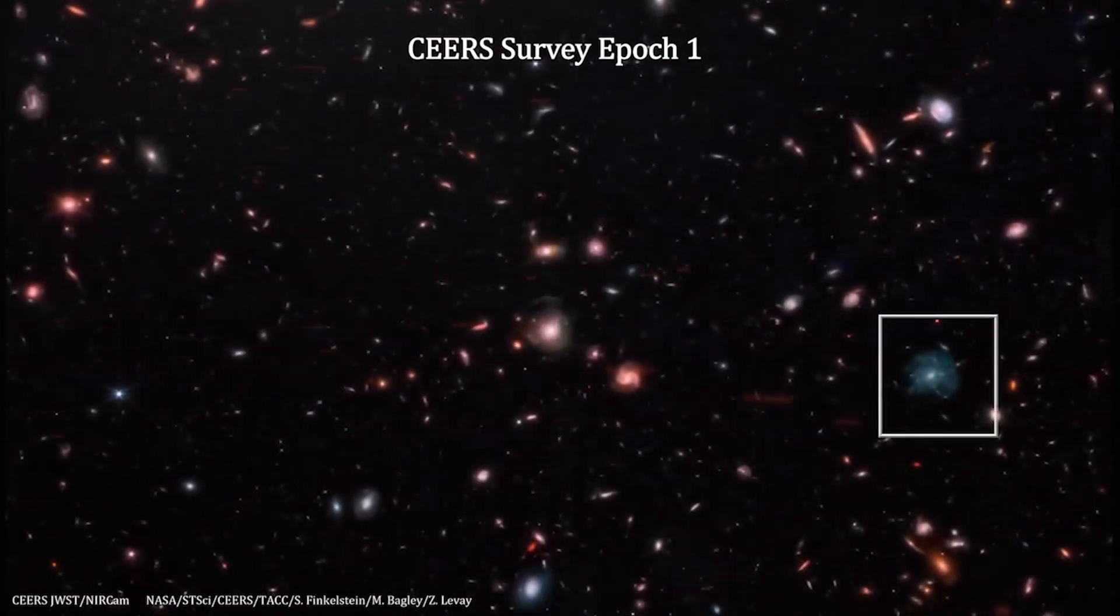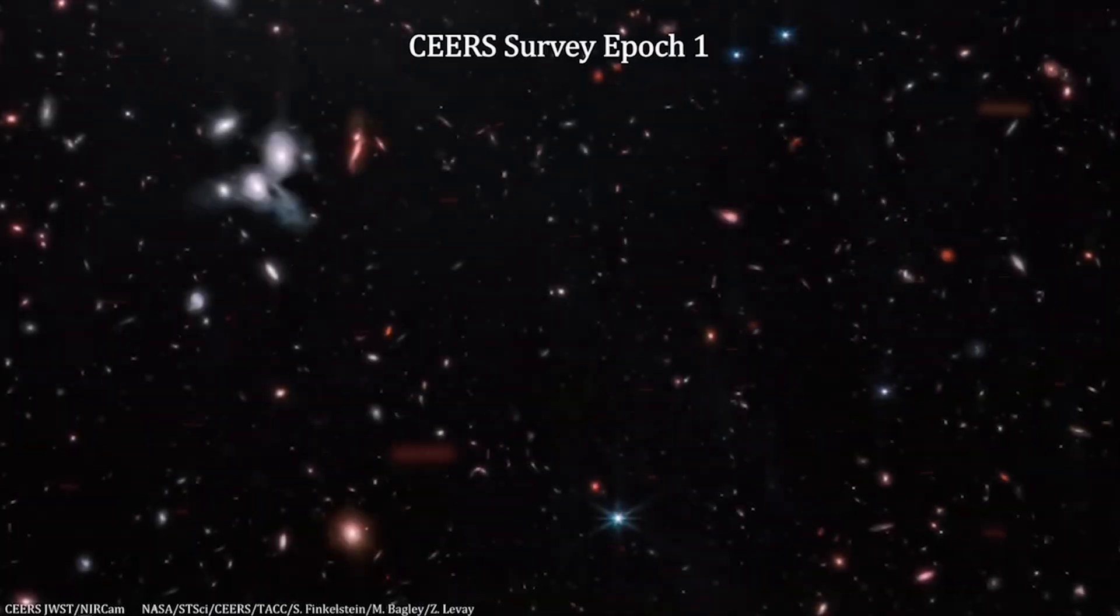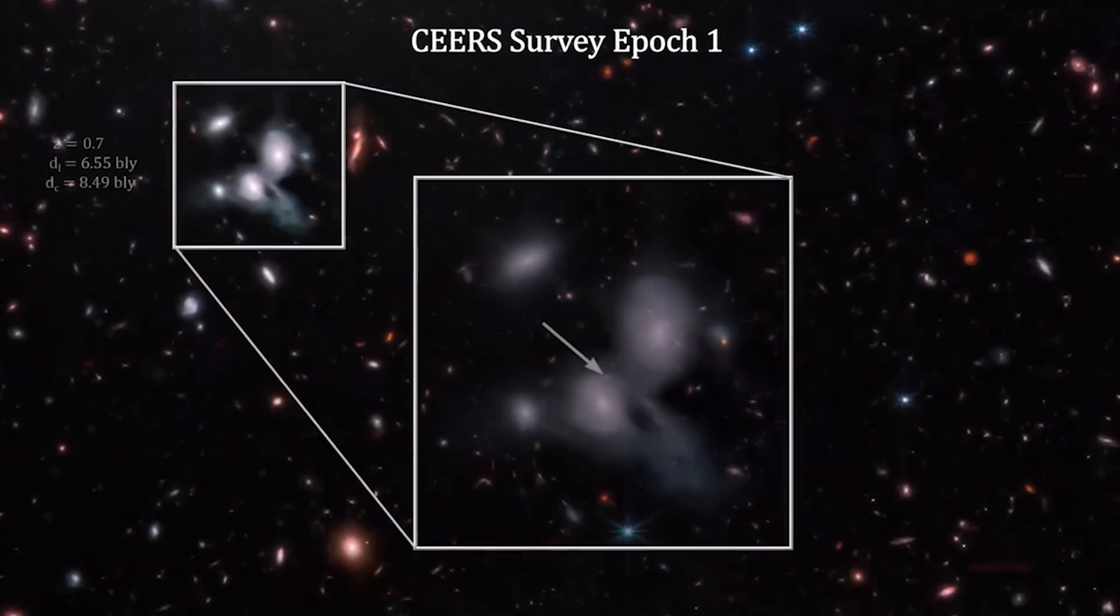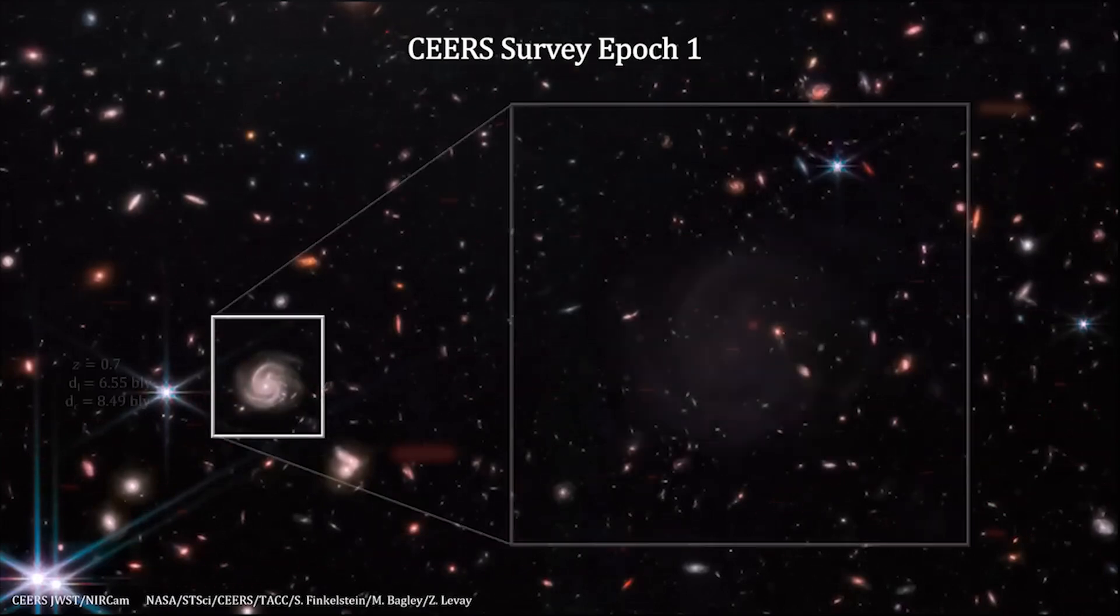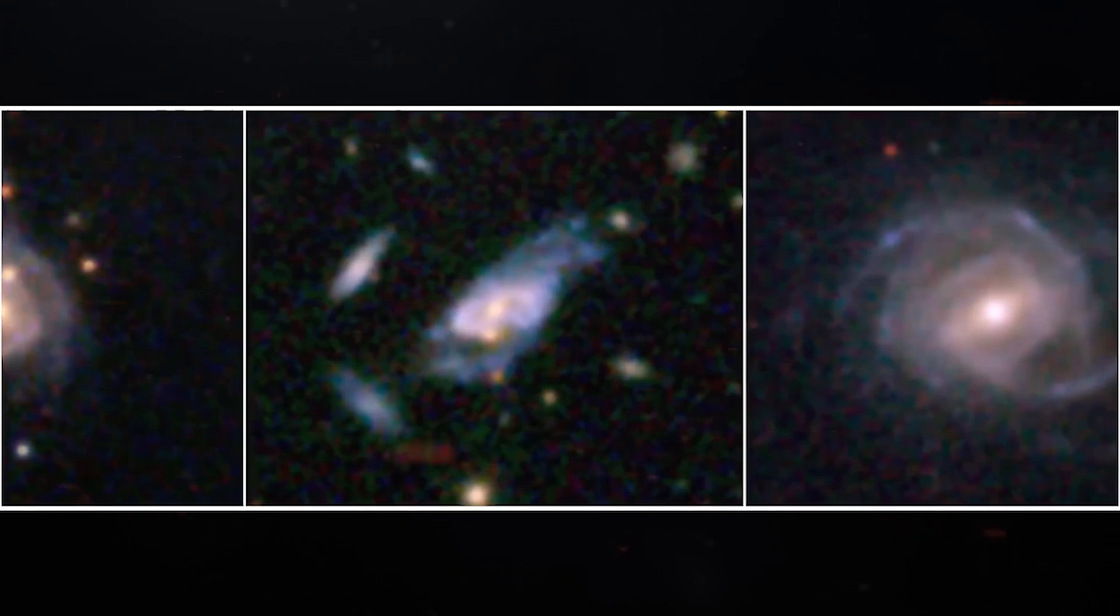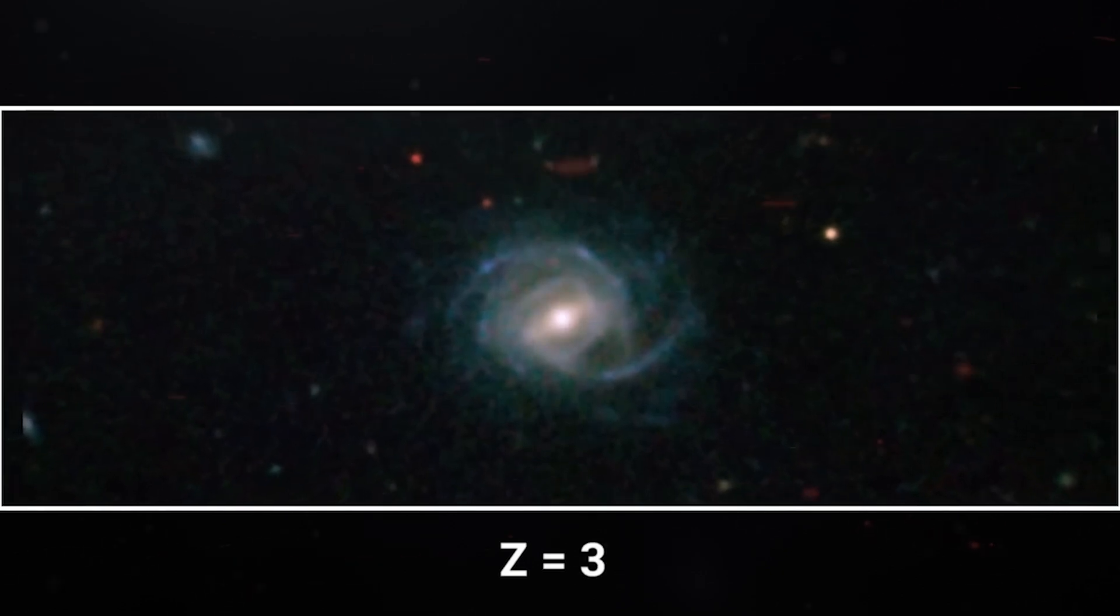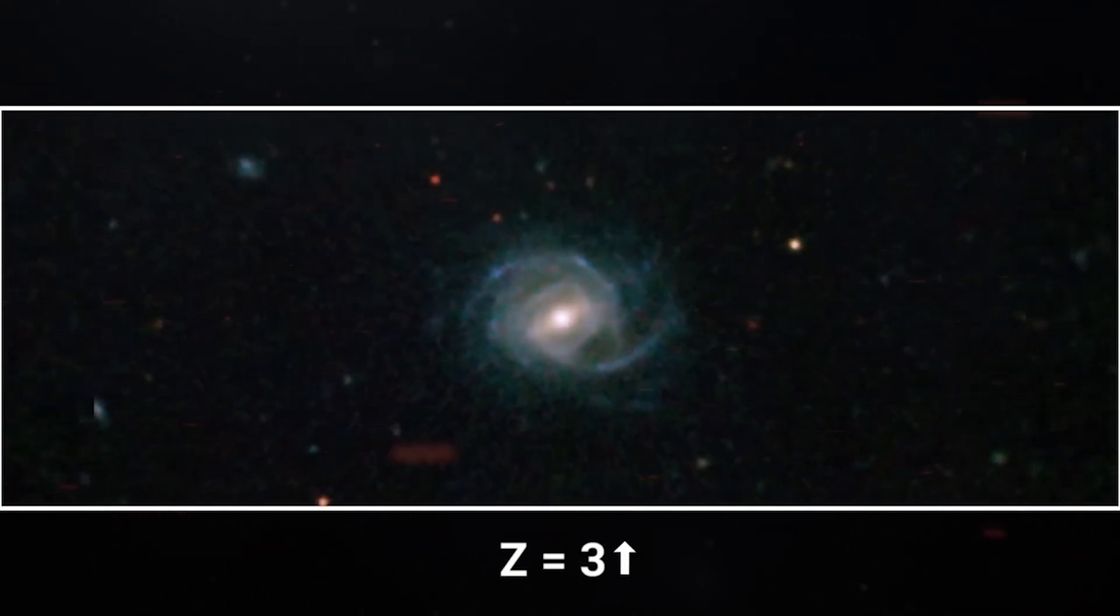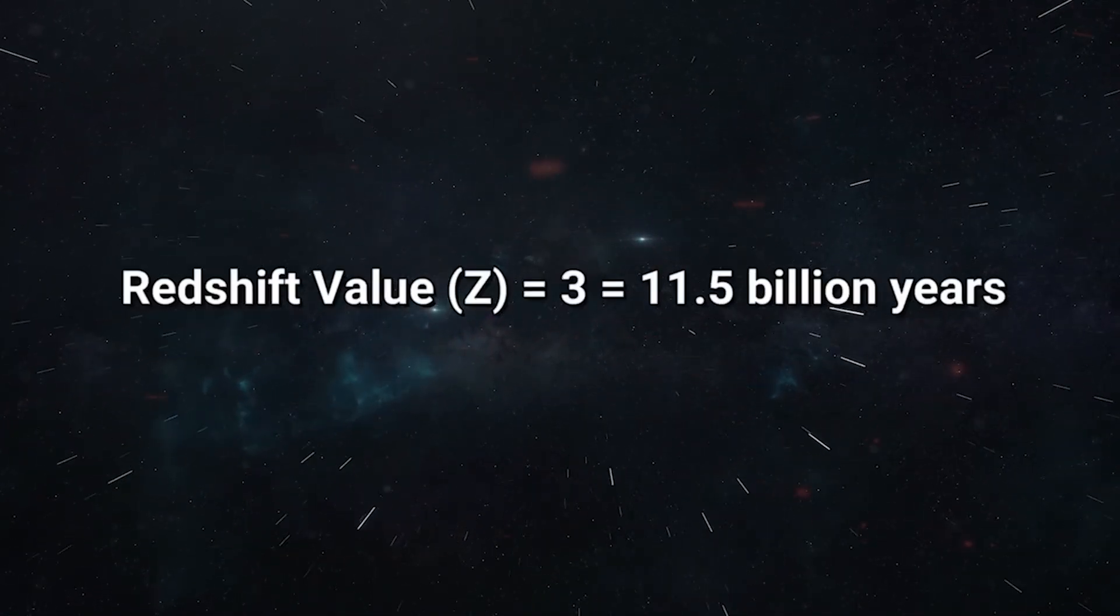Of these galaxies, 216 were classified as spirals. The researchers were careful to note that some may be merging galaxies that were misclassified. But even then, 108 of the galaxies were unanimously classified as spirals by evaluators. When the team arranged them by red shift, they found that while the fraction of spirals decreased as you went further into the past, the fraction of spirals at red shifts above Z equals 3 was much higher than expected. A red shift of Z equals 3 is around 11.5 billion years.